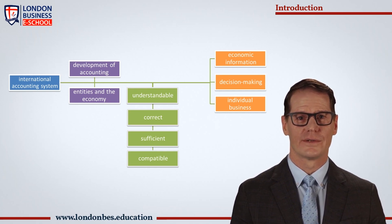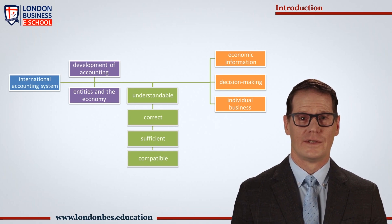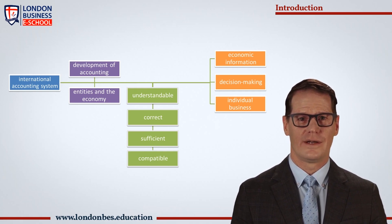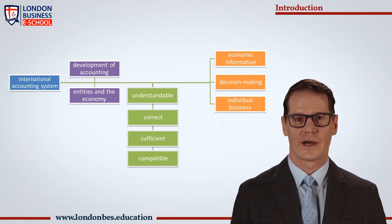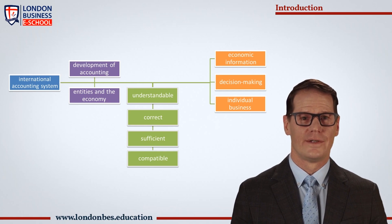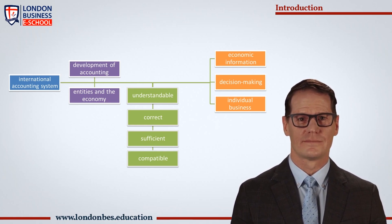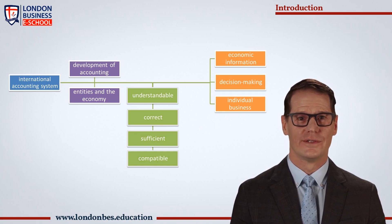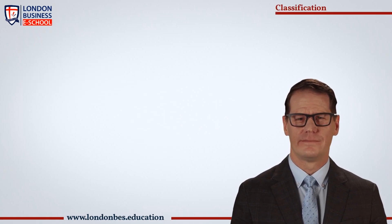The international accounting system was envisioned as a solution to the incompatibility of economic information across countries, economic entities, and users of such information who are tasked with economic decision making. As the international language of business, accounting should ensure that information formed both on the level of individual business entities and the economy as a whole is understandable, correct, sufficient, and compatible.